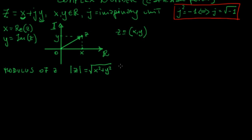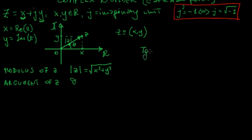We also have an inclination of this vector, which we call the argument of z, denoted theta. Looking at the right triangle formed, it is easy to find that the tangent of theta equals y over x. One might say it is easy to solve for theta by taking the arctangent of y over x — but this comes with a big warning.